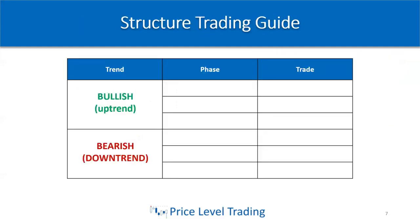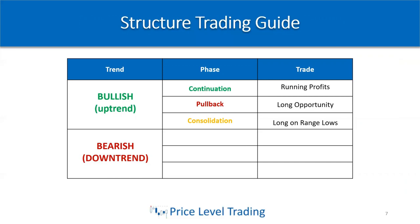Here's a structured trading guide. Let's say the trend is bullish — in an uptrend — with three phases: continuation, pullback, and consolidation. During continuation, run your profits and move your stop up appropriately as the trade works in your favor. When you see a pullback in an uptrend, that's a long opportunity — wait for that pullback if you missed the continuation. Then during consolidation after the pullback, go long at the range lows for potential continuation up.